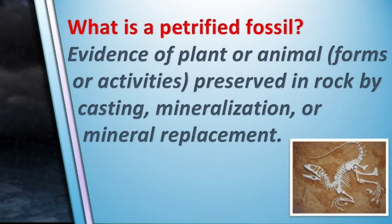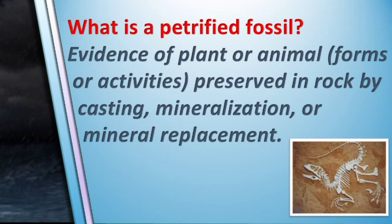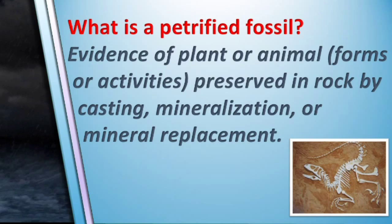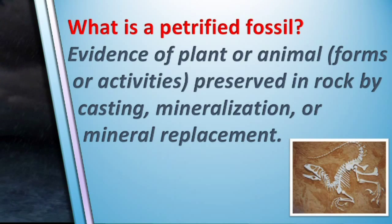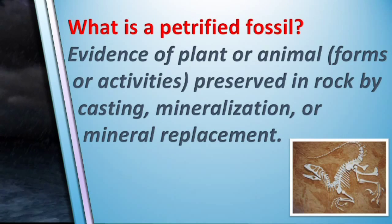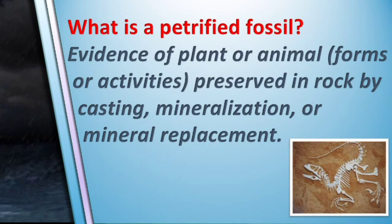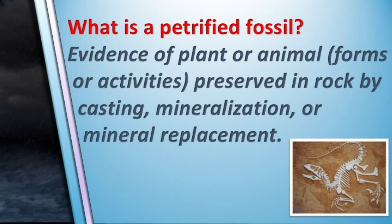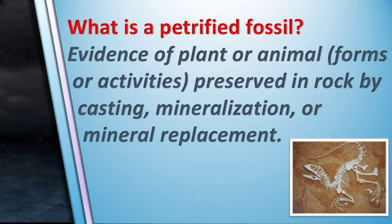To begin we need to define what we mean by fossil and then we can discuss how fossils are formed. For our discussion today we'll be speaking of petrified fossils, which are fossils that have actually been turned into stone. A petrified fossil is evidence of a plant or an animal preserved in rock by casting, mineralization, or mineral replacement.